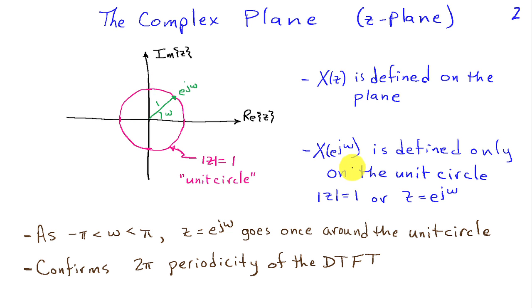So since the discrete-time Fourier transform is defined on this circle, you can see that as we continue to wrap omega outside of the minus pi to pi interval, we can go to 5 pi over 2, or minus 3 pi, and so on, that we're just going around this circle as we let omega increase, and that confirms the 2 pi periodicity of the DTFT.